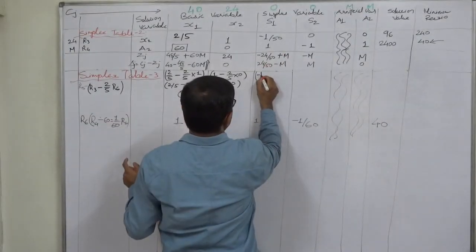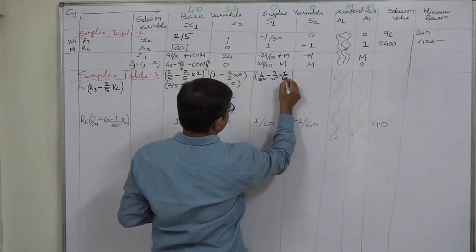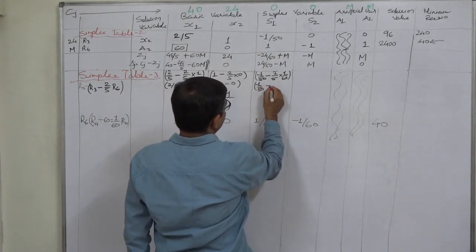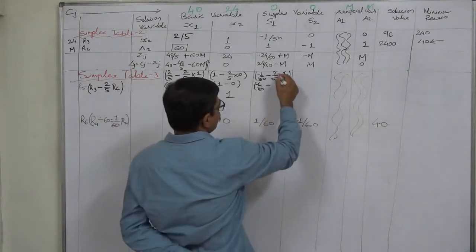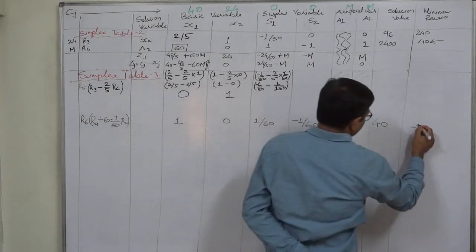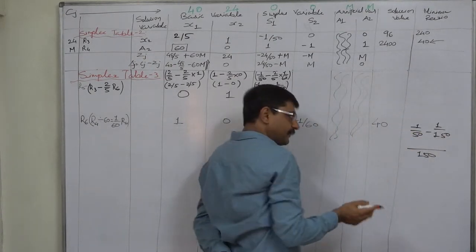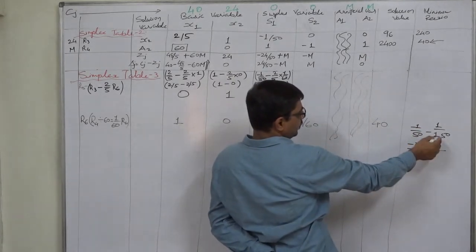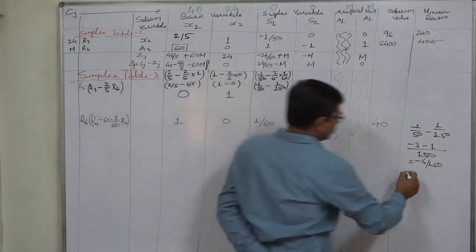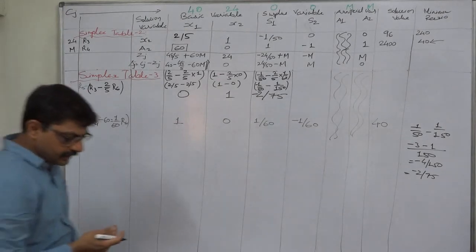Continuing R5: R3 is −1/50, minus (2/5) times R6 which is 1/60. Always do rough work freely: −1/50 − (2/5)(1/60) = −1/50 − 2/300 = −1/50 − 1/150. Taking LCM as 150: (−3 − 1)/150 = −4/150, which simplifies to −2/75.